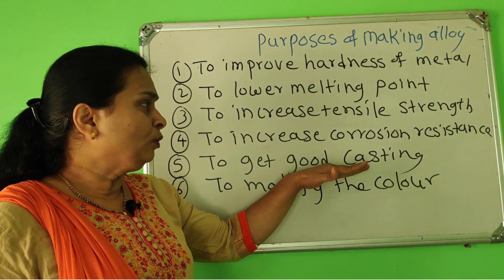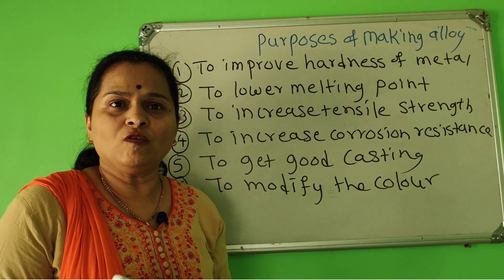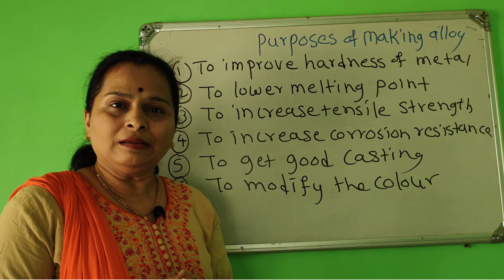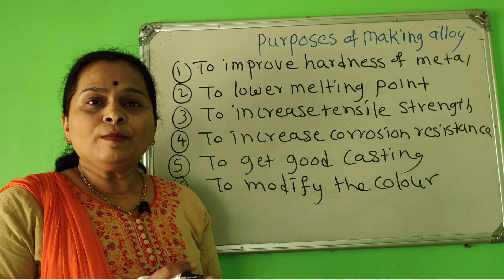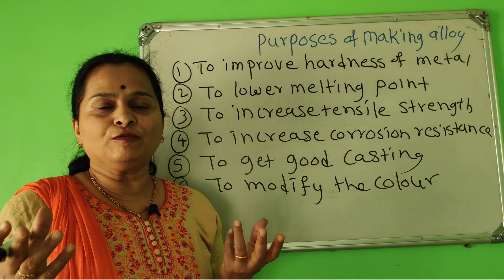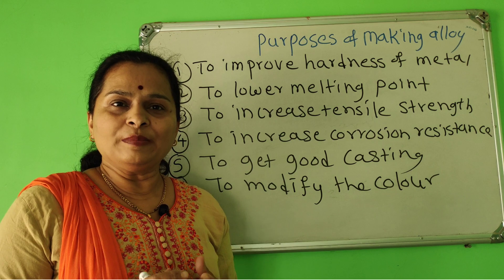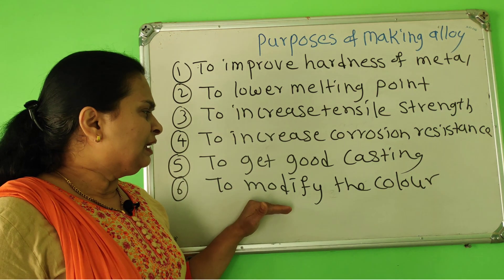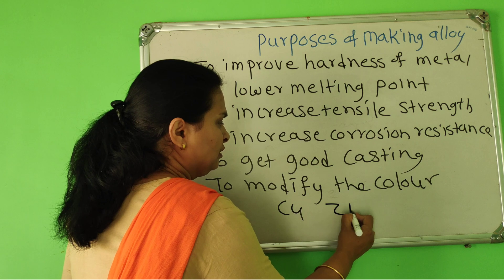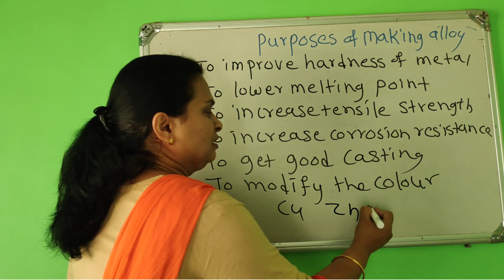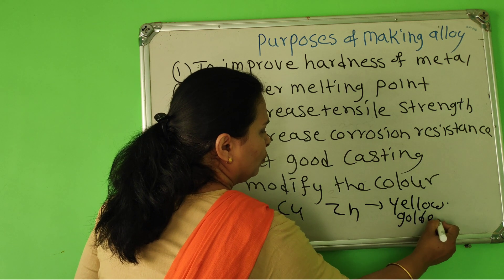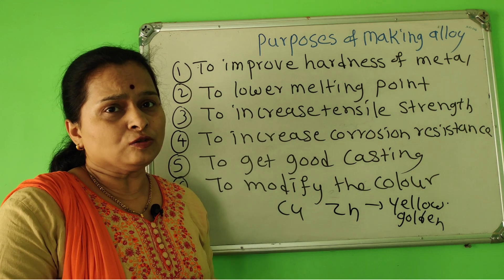To get good casting: bronze — alloy of copper and tin — is used for casting purposes for metal trophies, etc. Pure metals contract on solidification, while alloys expand on solidification. Therefore, alloys get the accurate shape or dimension of the mold. To modify the color: copper has red color and zinc has white color, but their alloy brass has a golden yellow color. So alloying is also done to modify the color.